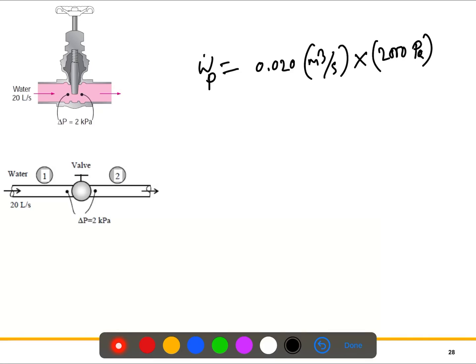And this is 2000 Pascal. We're looking for the units in watts, so we know 1 watt equals 1 Pascal times m³/s. We know the conversion units, so you can cancel out this, you can cancel out this.